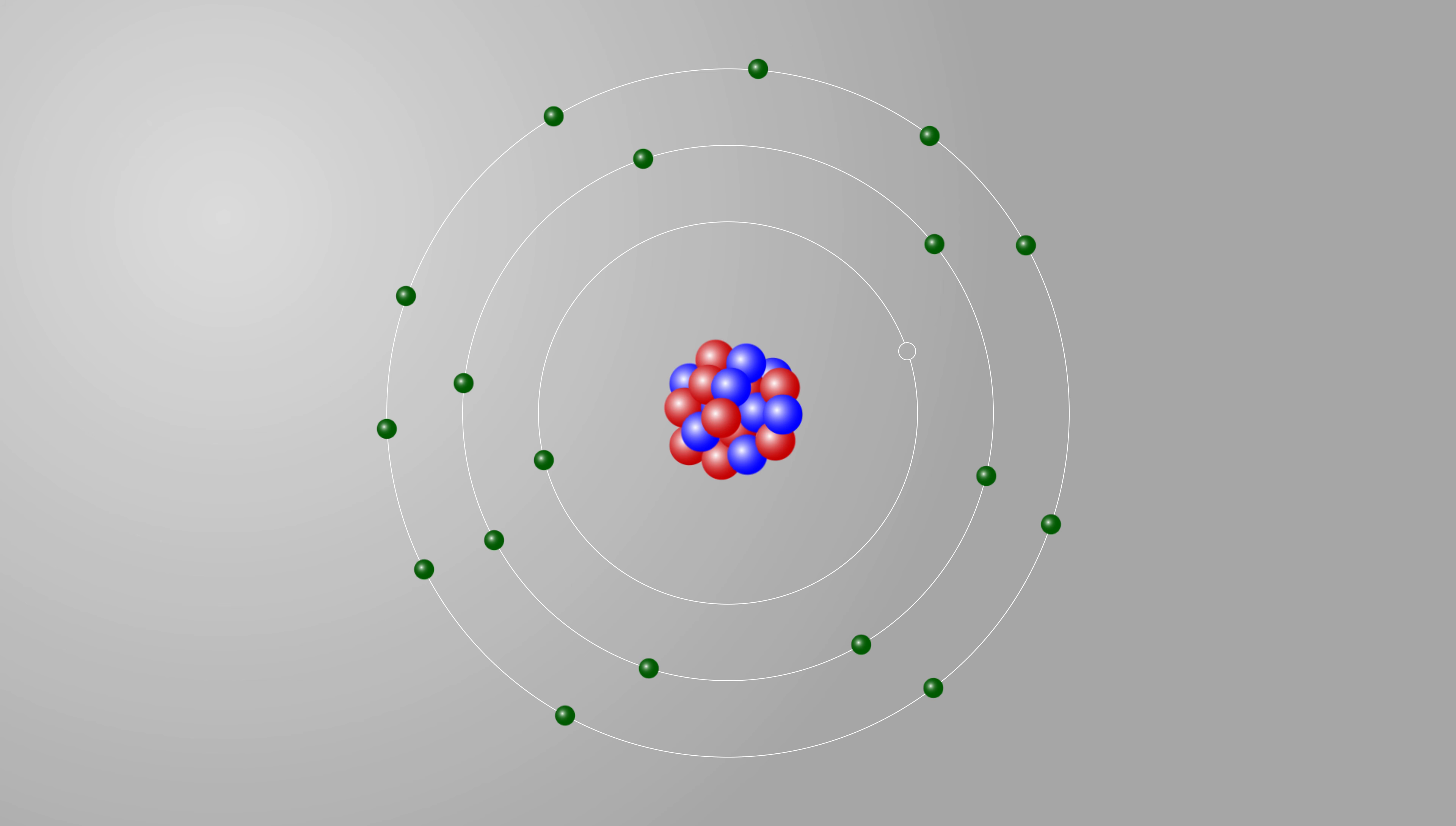As electrons drop back to the lower levels, they either release the excessive energy they have just received as photons, or share it with other electrons in the atomic electron shell.